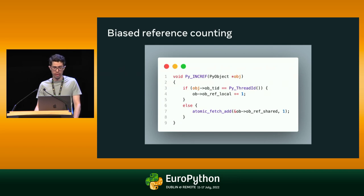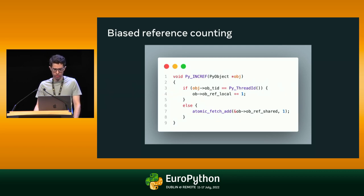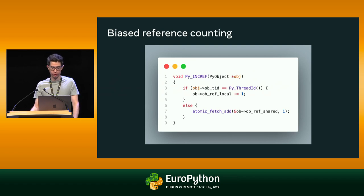The algorithm checks if the object's thread ID matches the current thread ID. If they match, it increments the local reference count field using normal non-atomic increments. Otherwise, it increments the shared field using an atomic operation. This is faster than just using atomic reference counting because, on current hardware, the extra comparison to check the thread ID is cheaper than the cost of an atomic increment. This has some similarity to Adam Olson's Python safe thread strategy, but biased reference counting avoids the blocking operation where a different thread has to wait for the original thread to give up ownership.